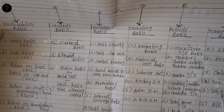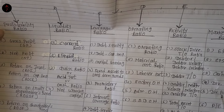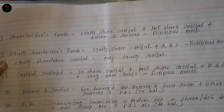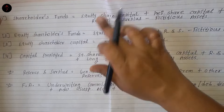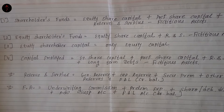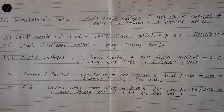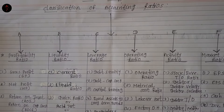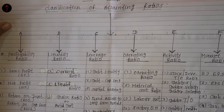Students, हमारे next lecture में we are talking about leverage ratio and operating ratio. आज के lecture में हम इतना ही करते हैं. You have to understand these four formulas very well — और reserve and surplus और fictitious assets किसे कहते हैं, that I already explained. तो मिलते हैं हम लोग next lecture में for another two lines of ratio — leverage ratio and operating ratio. बाई everyone.